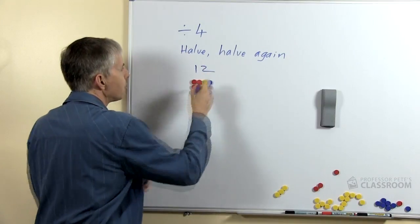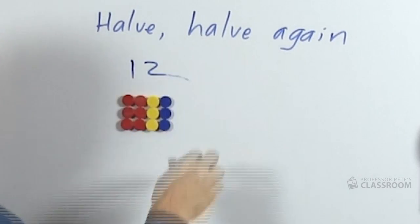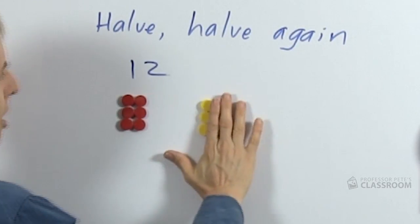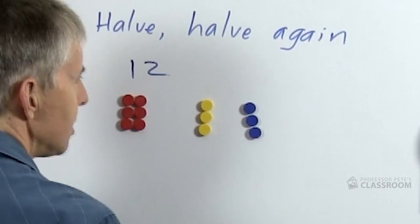Here's an example. If we have 12 and we say what's half of 12? Students should be able to do that. Half of 12 is 6, and what's half of 6? That's 3.